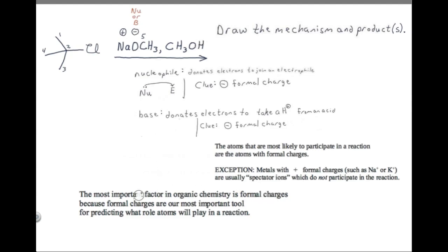Formal charges are your most important tool for predicting what roles atoms will play in the reaction. Now what about the sodium plus? Atoms with formal charges usually participate in reactions, but metals with a positive formal charge — such as sodium plus or potassium plus — are an exception. A metal with a positive formal charge is usually a spectator ion that does not participate in the reaction. So we expect this sodium plus, despite its formal charge, to be a spectator ion.